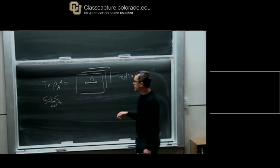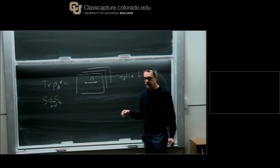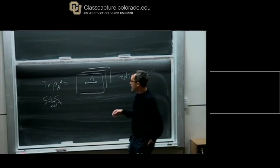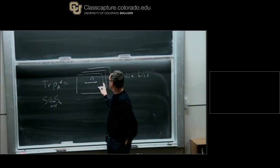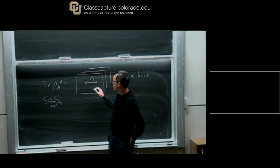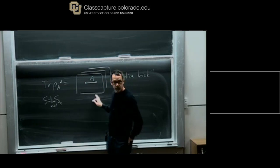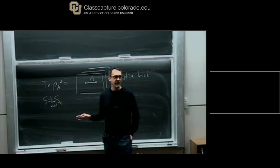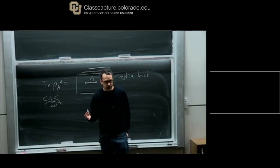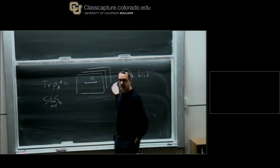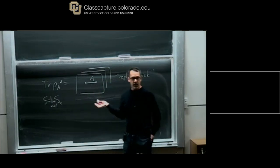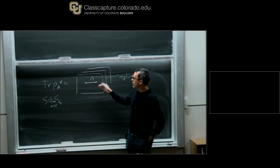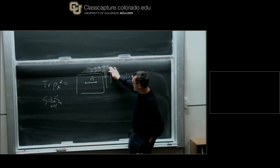Miriam just asked me an excellent question which may have also confused some of you. What I said is that we're going to compute this for alpha equals two, three, et cetera, and then take the limit alpha to one. Why don't we just go ahead and take the limit alpha to one first before doing all that work of computing the partition function on some complicated manifold? After all, taking alpha to one is very easy.